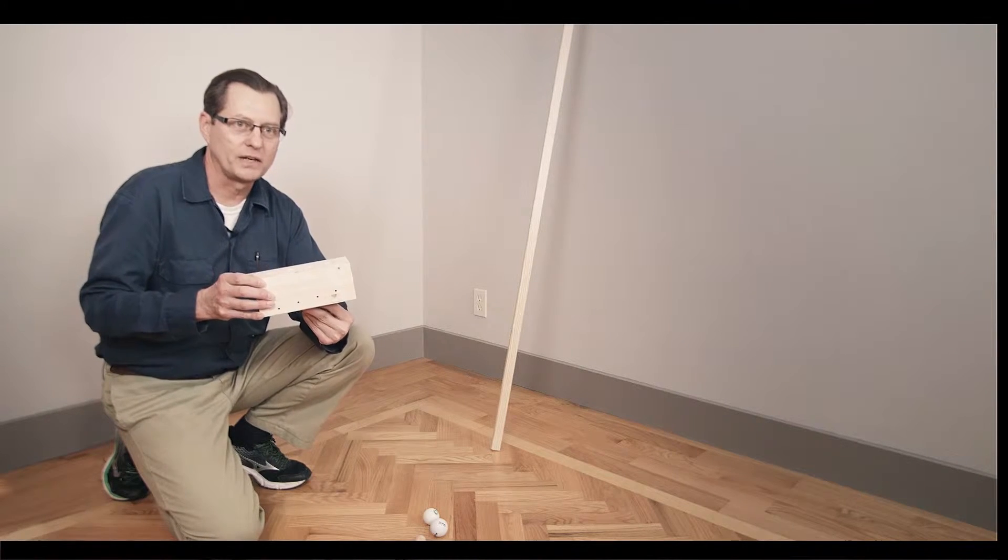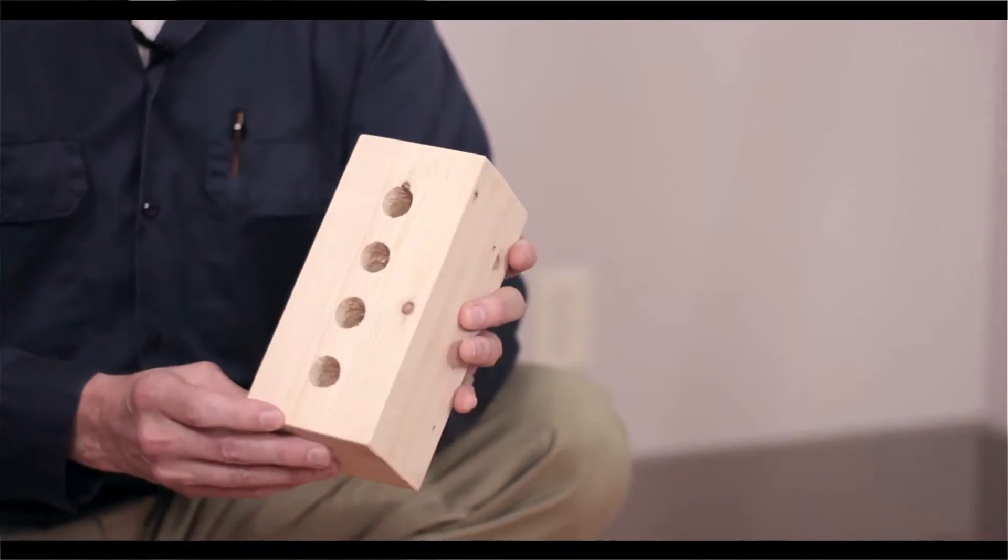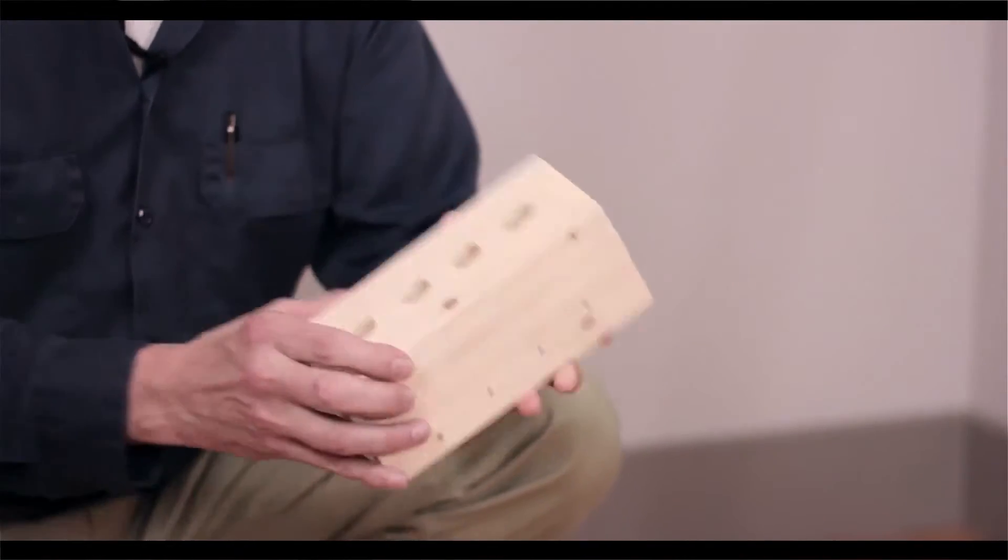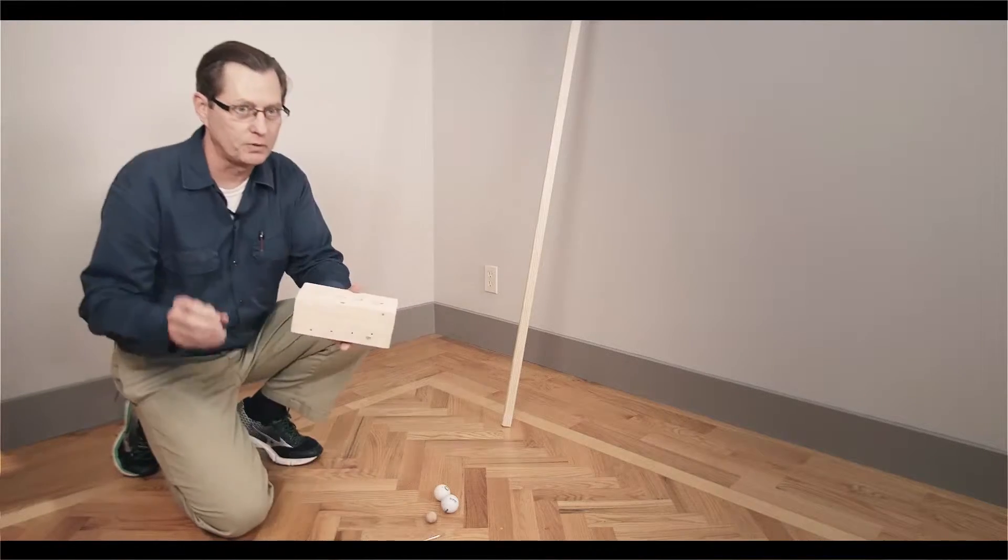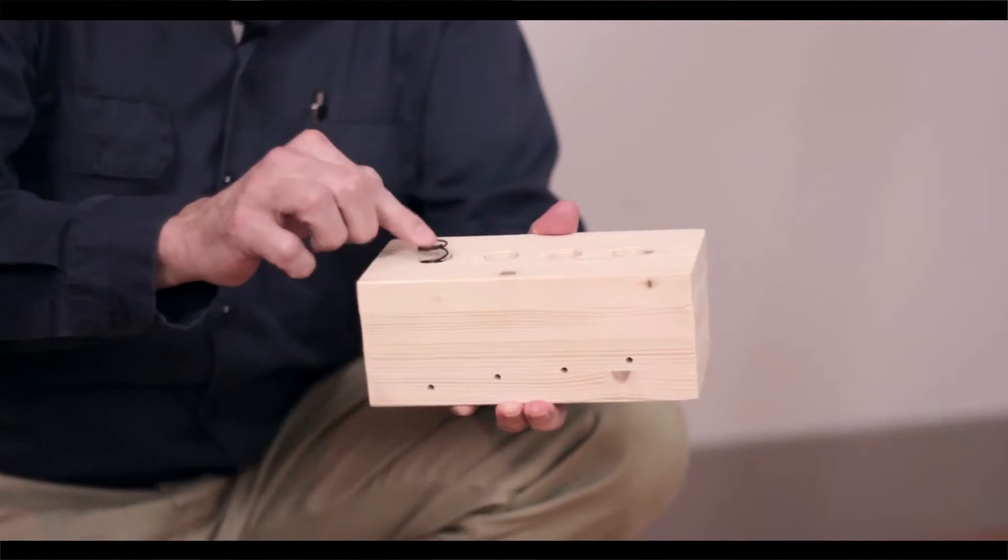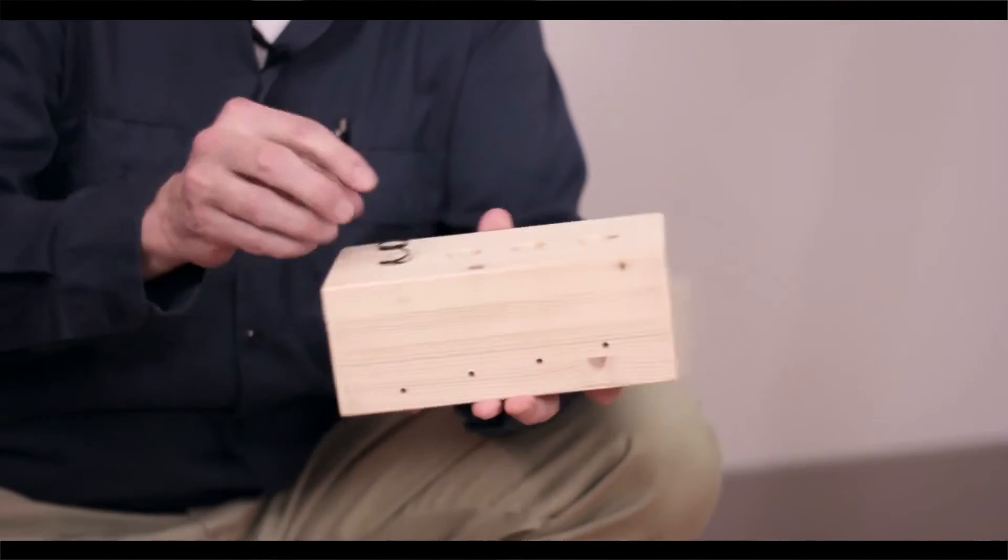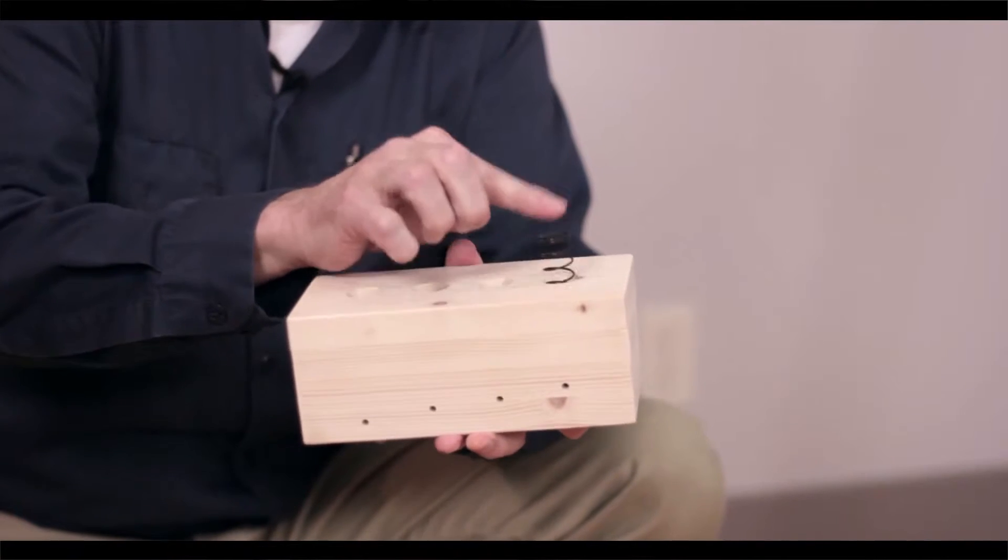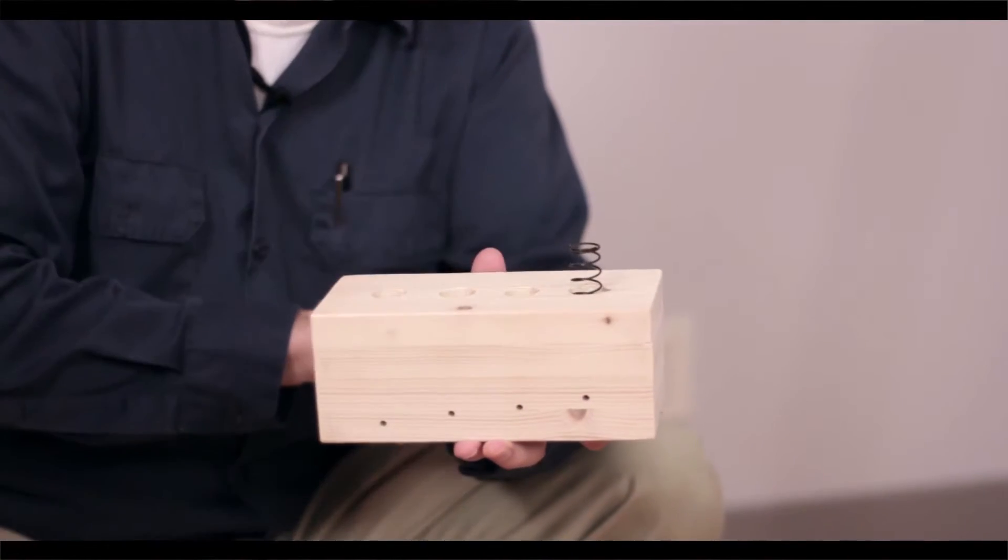I made this spring launcher jig. It has four holes in the top and the holes are different depths. When we put a spring in the hole, in this hole the spring sticks out about a half an inch. In this hole, the spring sticks out a lot more.